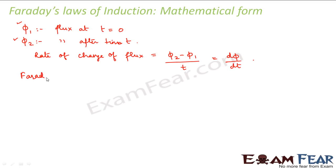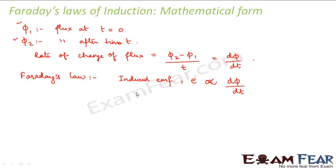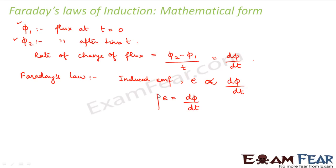According to Faraday's law, if there is a change of flux then there would be an induced EMF, so the induced EMF E is proportional to the rate of change of magnetic flux with time. When converted into an equality, it was experimentally found that the constant of proportionality was one in all units. So Faraday stated that E equals dΦ/dt, meaning the induced EMF in a circuit equals the rate of change of magnetic flux.